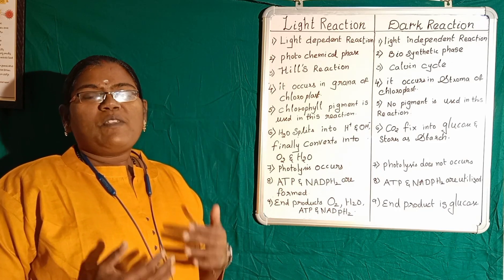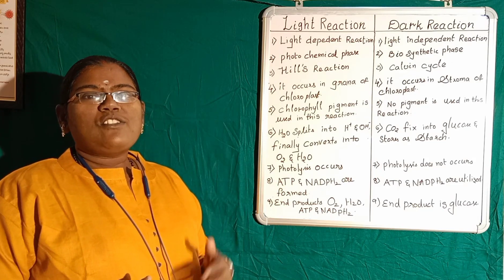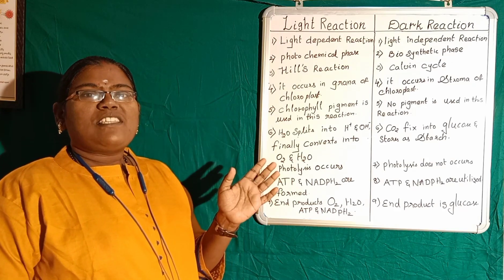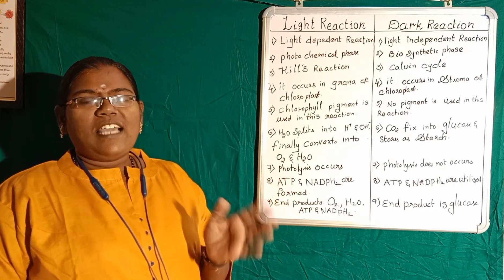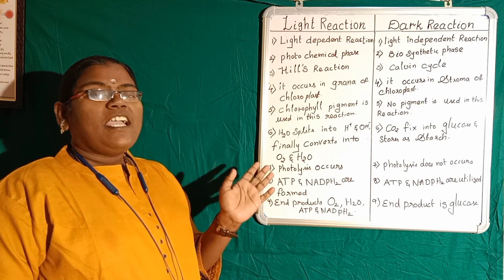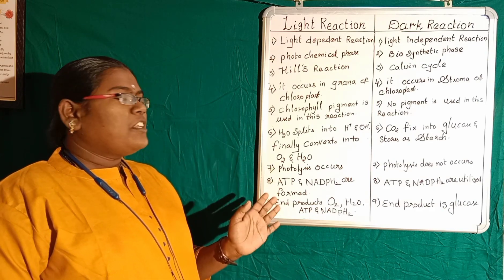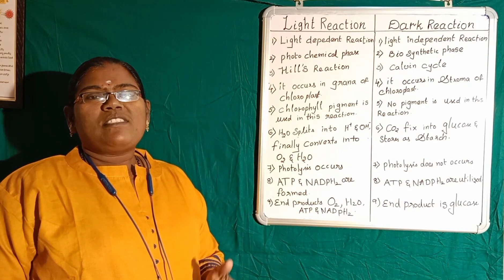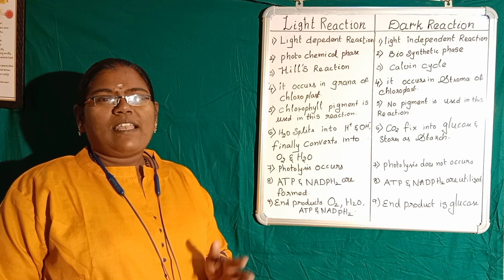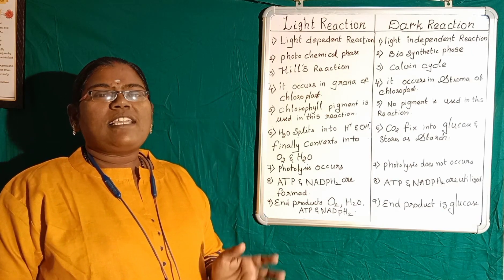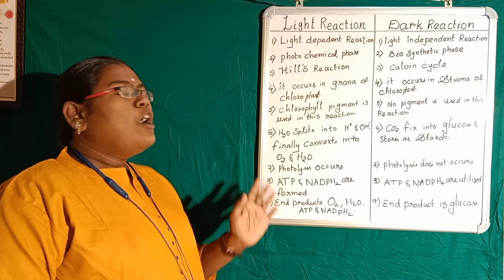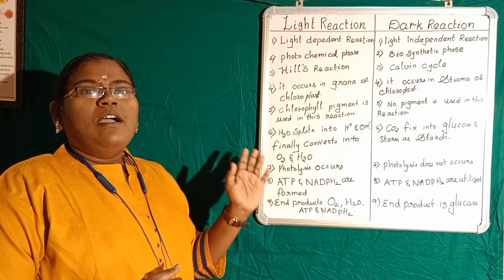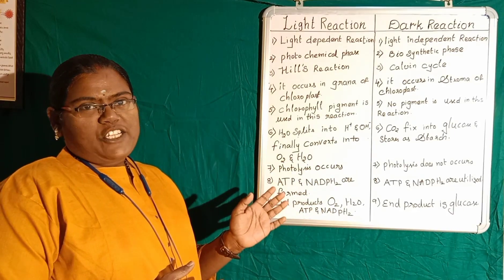So let us start from the first lesson. The first video covers the differences between the light reaction and dark reaction. Here I am mentioning those 8 points. In some books they will be giving 5, 6, 7 points like that, but I have condensed all those things and I am giving a full-fledged 8 points. So now we are entering into the explanation part.